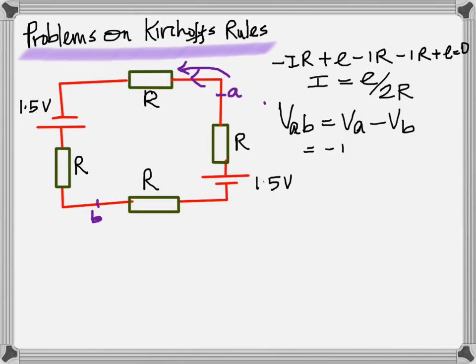So you're going in the direction of current. Since you're going in the direction of current it'll be negative IR, which will be the potential drop here, plus since you're going from negative to positive it'll be positive E, which is the EMF or potential difference of the battery. And then again across this you're still going in the direction of current so it'll be negative R, and again negative R through this one, and here you're going once again from negative to positive so it'll be plus E, equal to zero.